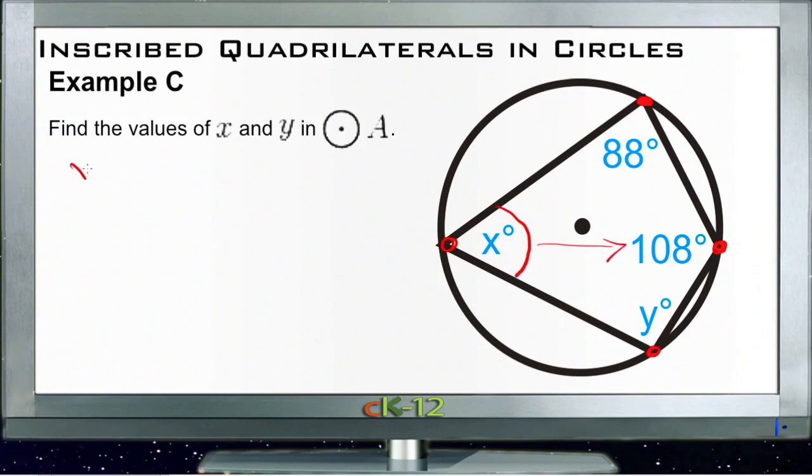So we have x plus 108 equals 180. Subtract 108 from each side. x equals 72.